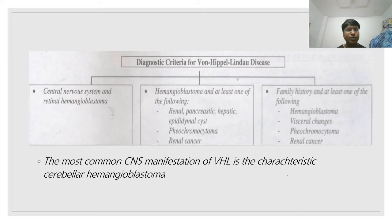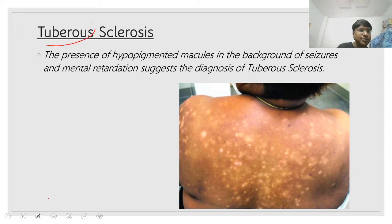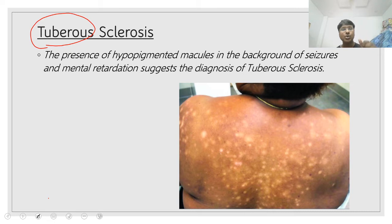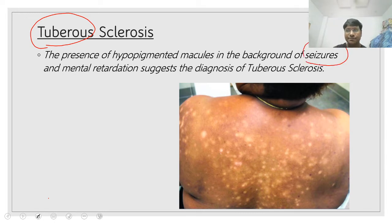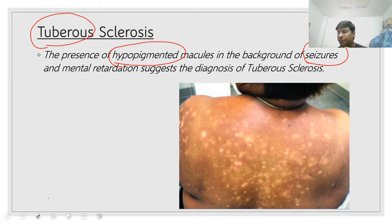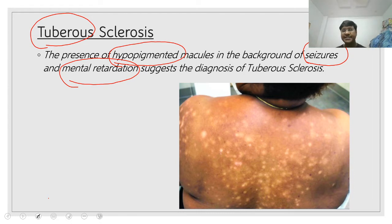We will now move to tuberous sclerosis. When should you suspect tuberous sclerosis? If an individual has seizures along with hypopigmented macule and mental retardation, this will suggest the diagnosis of tuberous sclerosis. It is also called Bourneville disease.